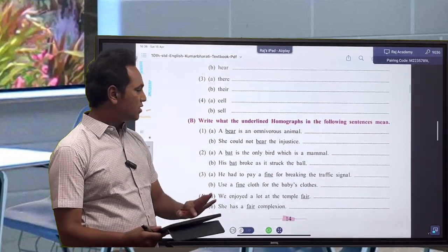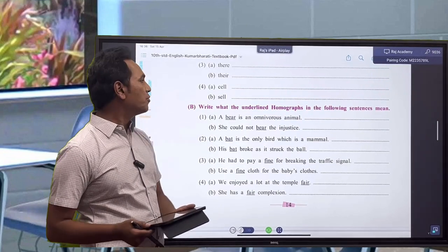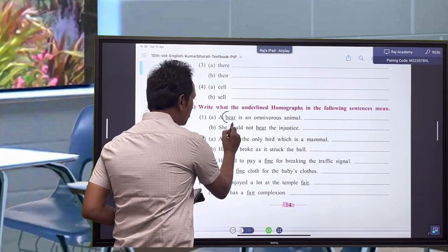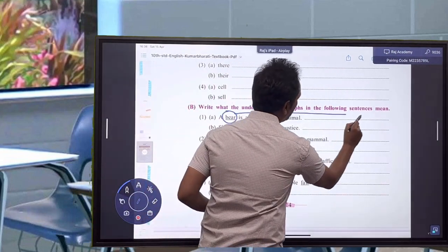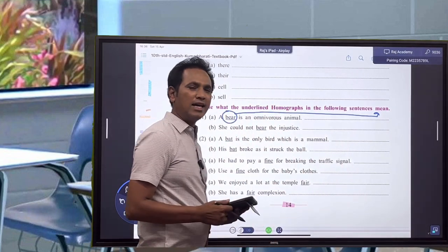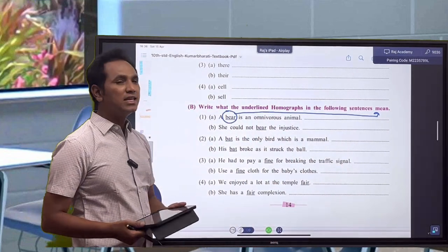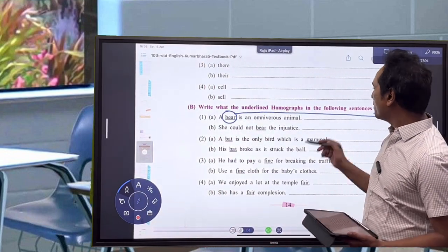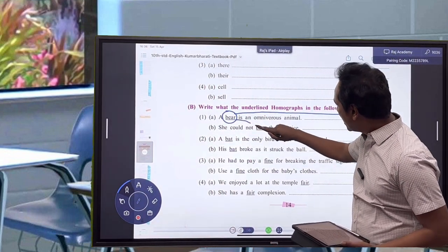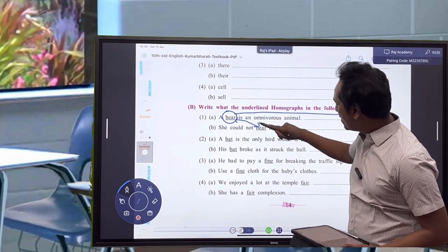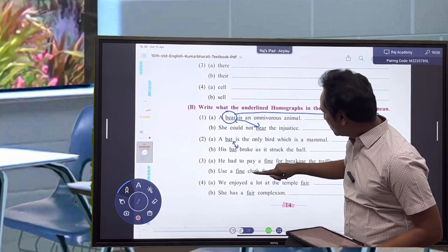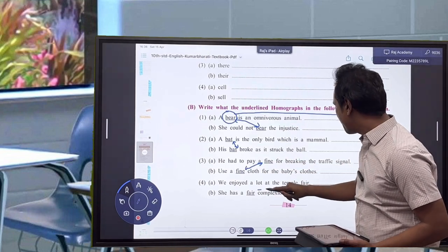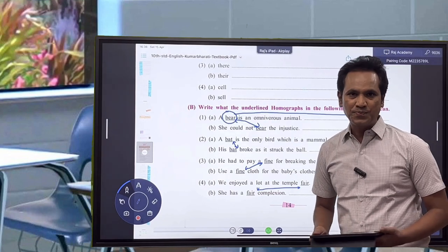Write what the underlined homographs in the following sentences mean. A bear is an omnivorous animal—here is bear, and here is again bear. Then bat, bat, fine, fine, and then we have fair, fair. So these are the homographs.